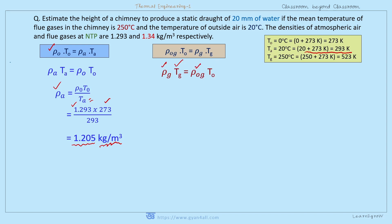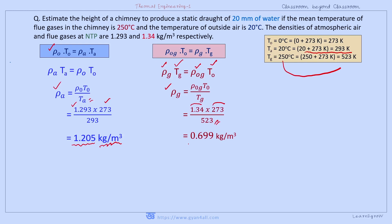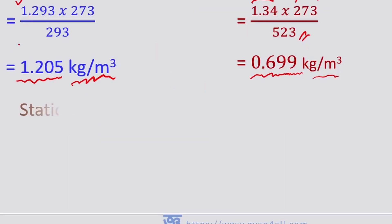Similarly, using ρ_G·T_G = ρ₀_G·T₀, we solve for ρ_G — the density of flue gas at 250°C. Substituting: ρ₀_G = 1.34 kg/m³, T₀ = 273 K, T_G = 523 K. Doing the calculation gives ρ_G = 0.699 kg/m³.